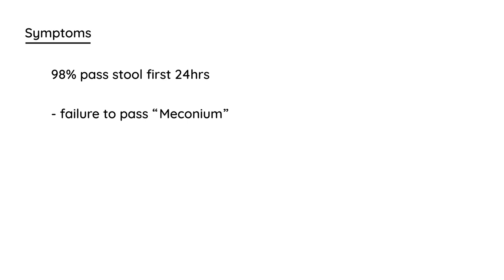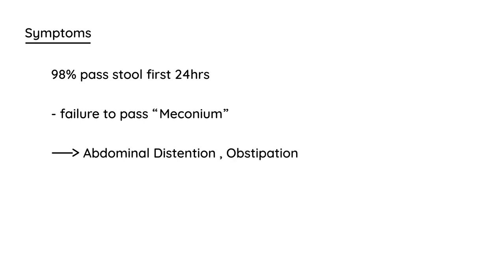Failure to pass meconium is a classic clinical vignette description. This leads to abdominal distension and obstipation, which is the failure to pass gas, and can eventually lead to vomiting. If this continues and is serious enough, bacteria in the stool can overgrow, leading to a serious complication known as enterocolitis.